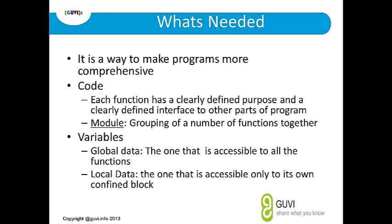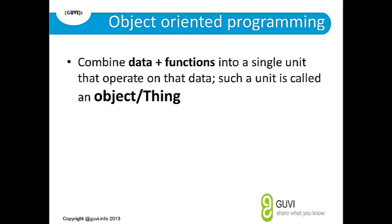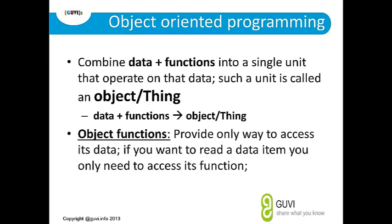Local data is confined to its own block. The primary goal of object orientation is to emulate real-world objects — for example, people who move. For this we have data and functions: height, weight, color are data, and functions are how we behave. Combining all this, we can bring it as an object, which is the core principle. Functions that need to be performed on the object are called object functions.